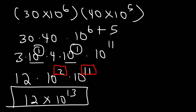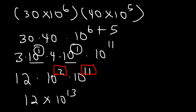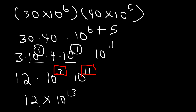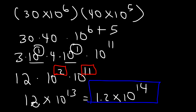There's one more thing — we can't have 12 as the coefficient because it's greater than 10. So we need to move the decimal one unit to the left. This gives us 1.2 times 10 to the 14, and that's the final answer in proper scientific notation.